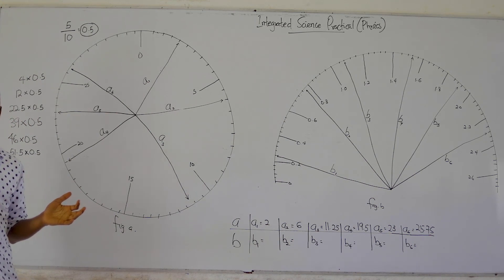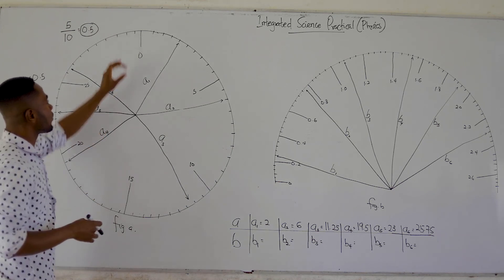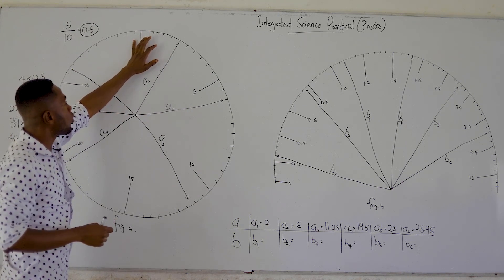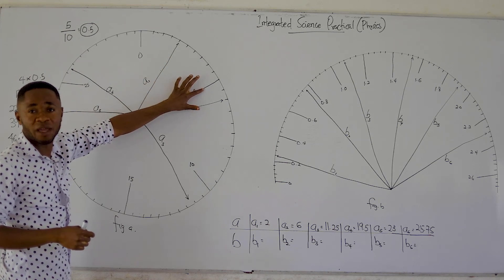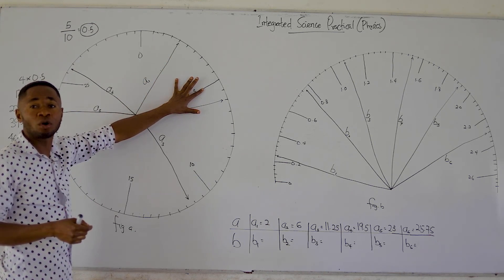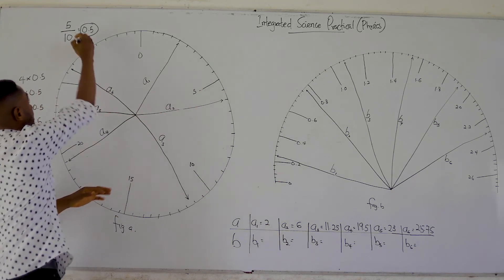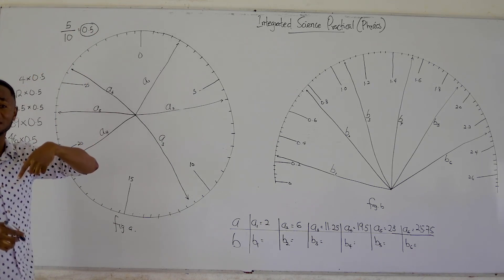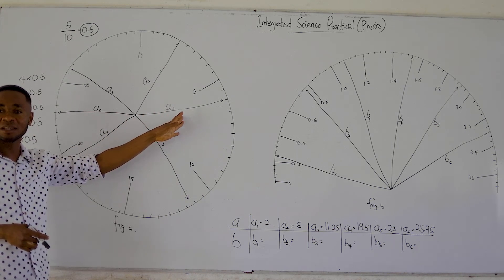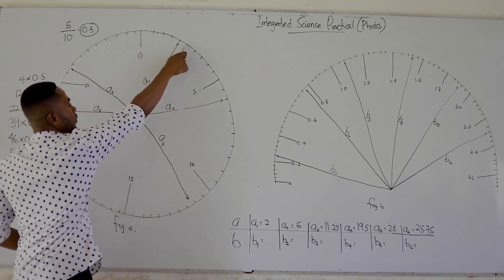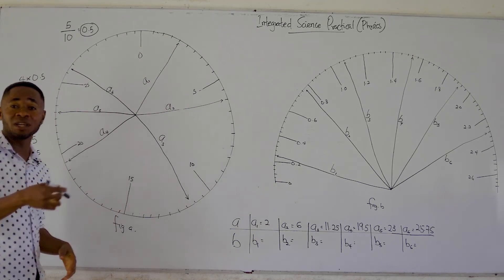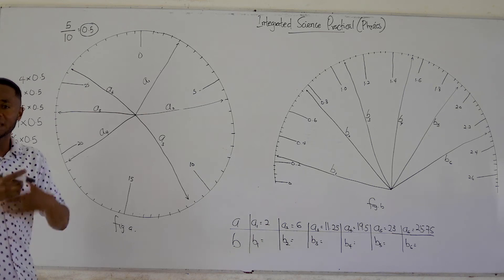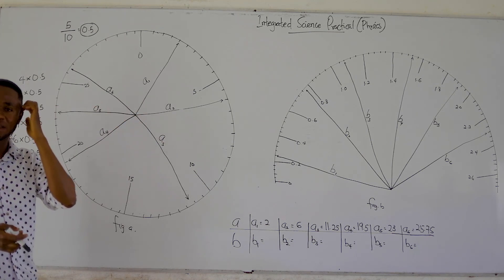Do you see how easy it has become? The first job: from the zero mark, find the next available number — that becomes your numerator. Then count the number of graduations from zero to that first value — that becomes your denominator. Divide on your calculator and keep that result. To read any point, count its graduations and multiply by that value. Let's apply the same idea to figure B.